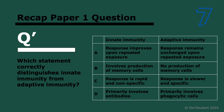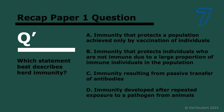Which statement correctly distinguishes innate immunity from adaptive immunity? The answer is C. Remember, innate is the same for all pathogens — it's really quick and not specific. Adaptive is much slower because it is specific, and there is production of memory B cells in adaptive. The innate response does not improve upon repeated exposure — it's always the same. And innate doesn't produce antibodies, so D is also incorrect.